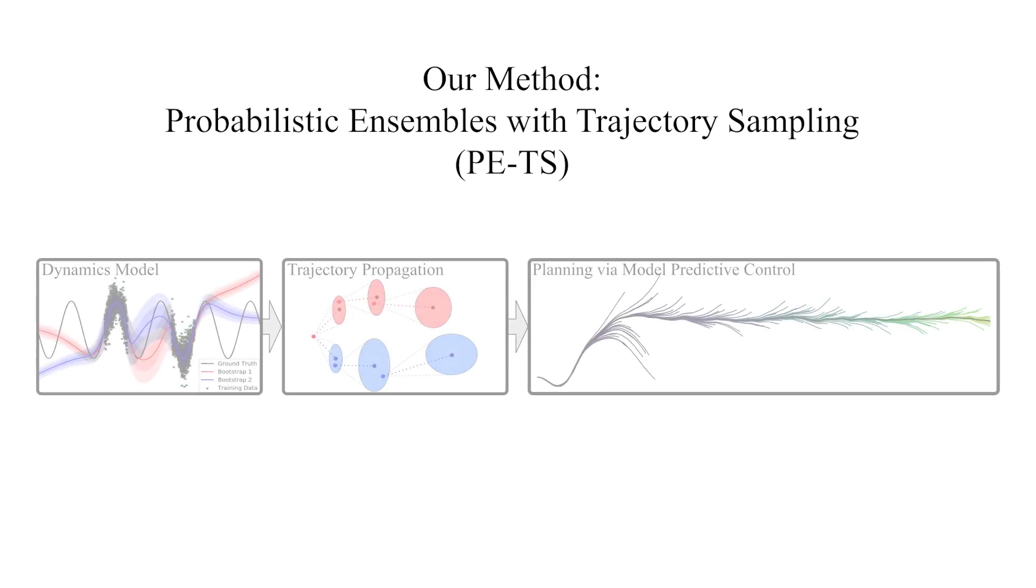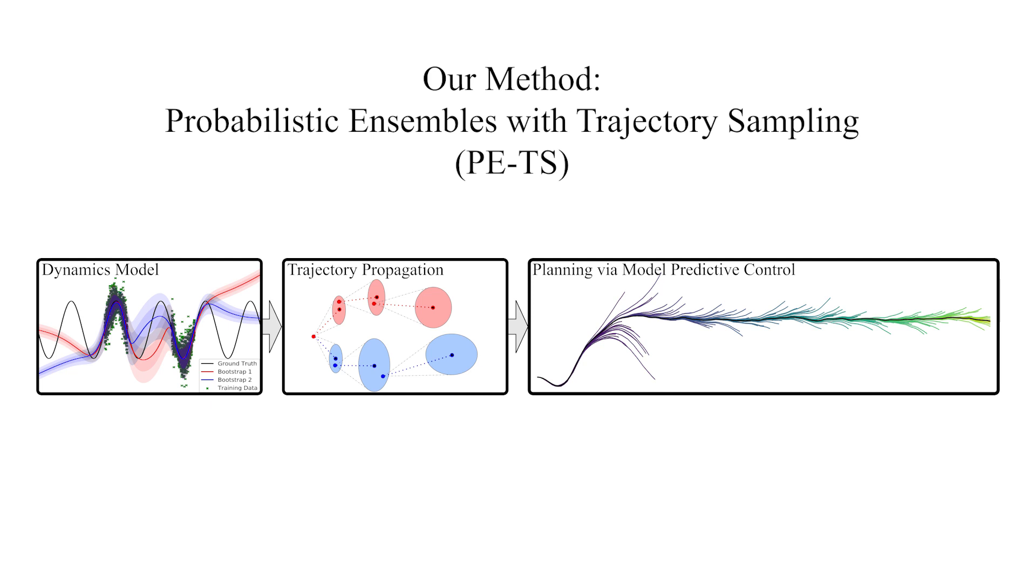In PETS, we use an ensemble of bootstrap neural networks to learn a dynamics model which predicts a distribution over the next state, given the current state and action.